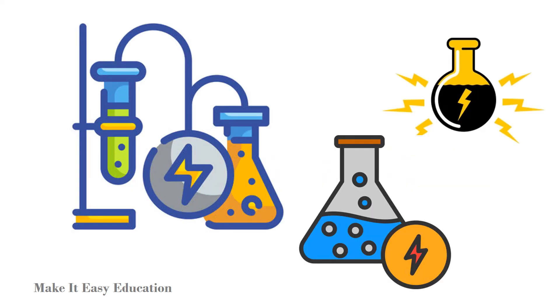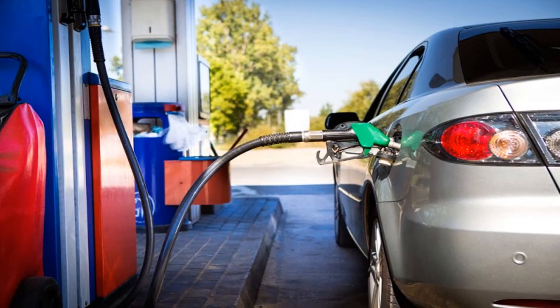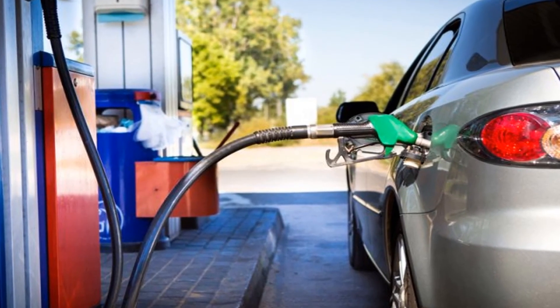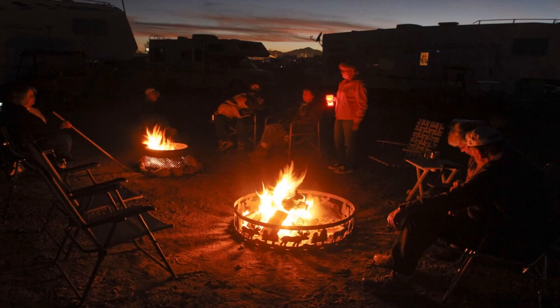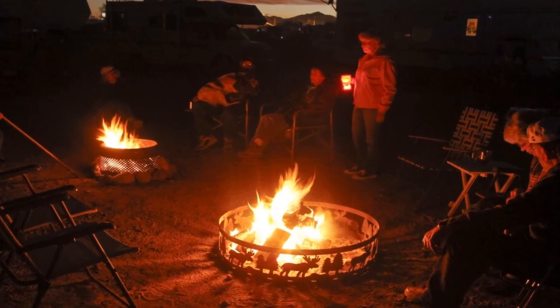Chemical energy is energy that can be released by a chemical change. Chemical energy from food gives us energy. Most cars run on gasoline, a source of chemical energy. Have you ever warmed yourself by a campfire? Fire is the release of chemical energy.